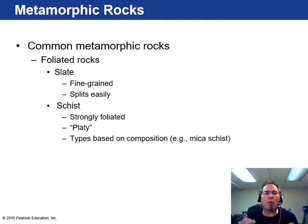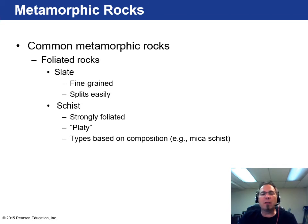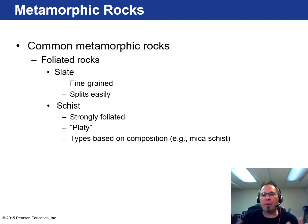Common metamorphic rocks include slate — used for chalkboards long ago, very fine grained and splits easily. Schist is a very beautiful rock — if you get the strongly platy ones, they have nice folds, very foliated and really platy. It's very sparkly because of all the little mica crystals — we call it mica schist.